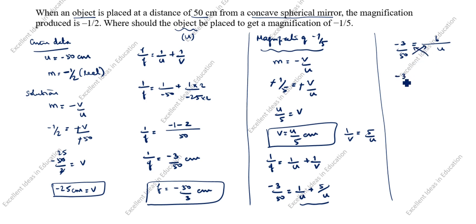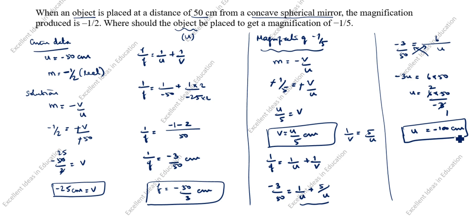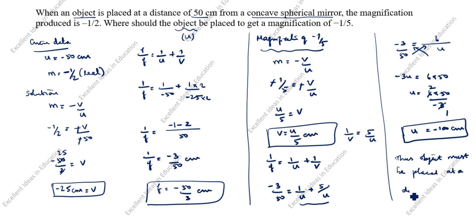Cross multiplying: minus 3 times u equals 6 times 50, so u equals 6 into 50 divided by minus 3. Simplifying, 6 divided by 3 is 2, so u is equal to minus 100 centimeters. Therefore, for a magnification of minus 1 by 5, u is equal to minus 100 centimeters. The object must be placed at a distance of 100 centimeters in front of the spherical mirror.